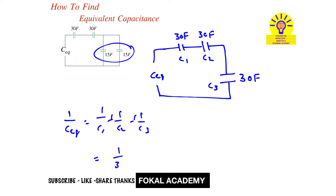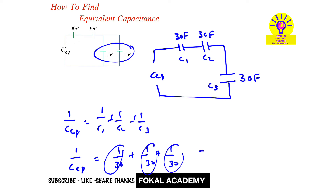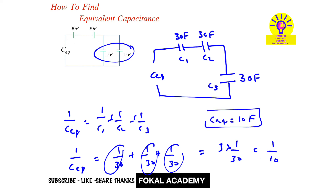So it becomes 1/30 plus 1/30 plus 1/30 equals 1 over C_equivalent. There are three terms, so it becomes 3 times 1/30, which is 1/10. From this we get C_equivalent equals 10 farads. So the overall capacitance for the given circuit is 10 farads.